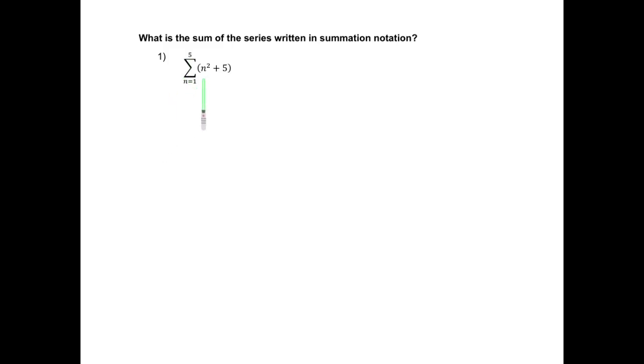It means that I'm going to add the value of whatever that expression inside of the parenthesis, substituting it for n from 1 through 5. So this means that in this case I'm going to have 1 squared plus 5, then plus 2 squared plus 5, plus 3 squared plus 5, plus 4 squared plus 5, and plus 5 squared plus 5.